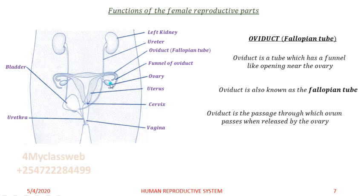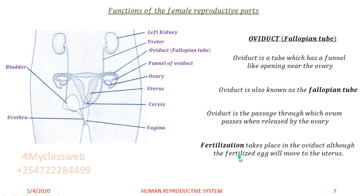When the ovary produces the ova, it will pass through the oviduct tube. As it passes through, if it happens to meet the male sex cell — the sperm — fertilization will take place in the oviduct. After fertilization, the fertilized egg will not remain there; it will move slowly and attach itself to the uterus.